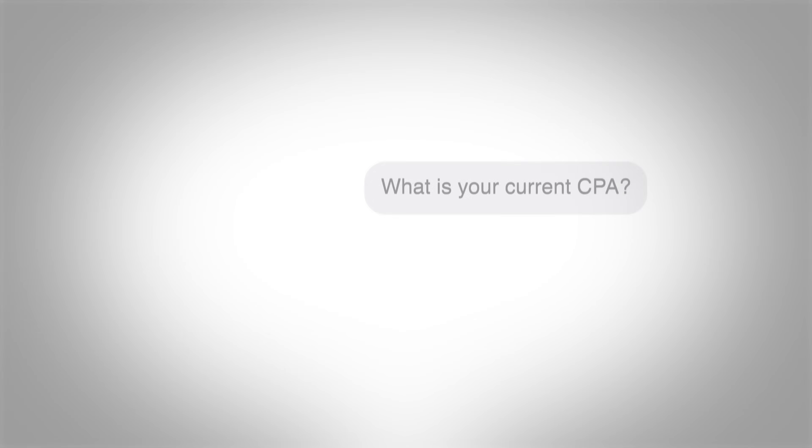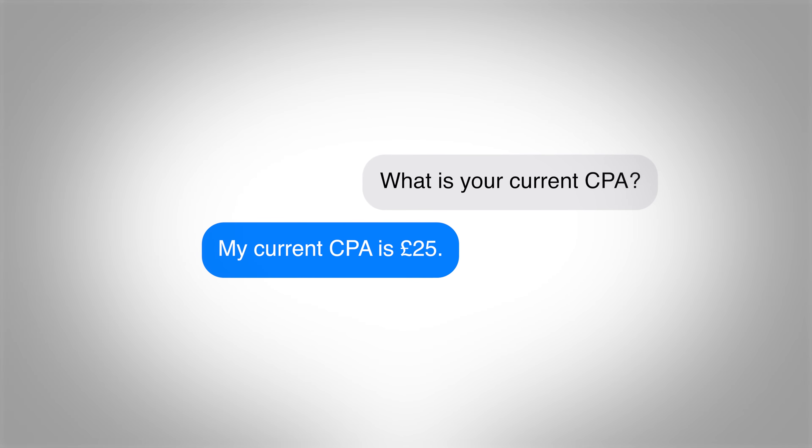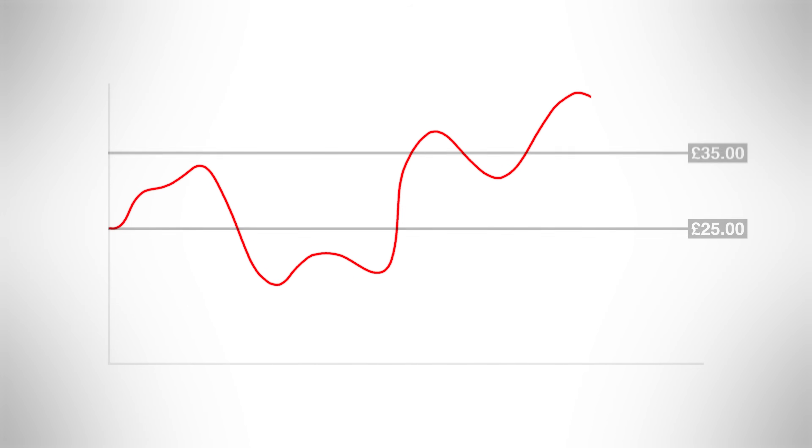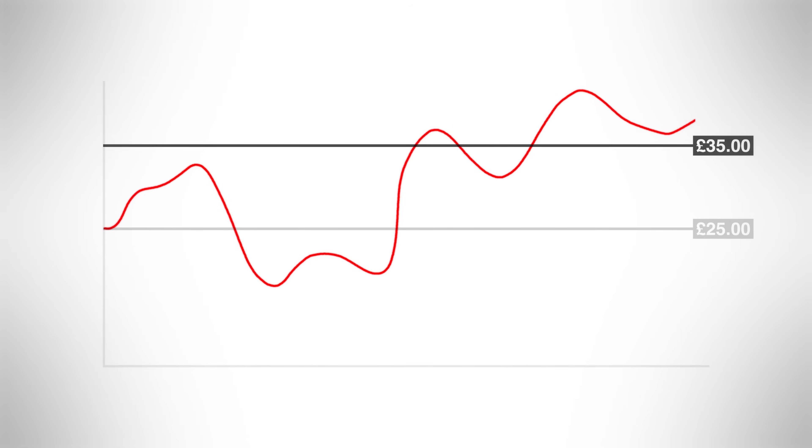I'd encourage you not to be overly ambitious. Often I'll speak to people and ask what their current CPA is, and they'll say £25. But when you look at their account, for a while it was £25 — however, over the last month the average is more like £35. They just had a good few days. We're often optimistic as marketers, and it's natural to overestimate how well things have been doing. Really look at that data. That's why we run the campaign for a while before making this switch — so we can look at the average over that time period and start there.